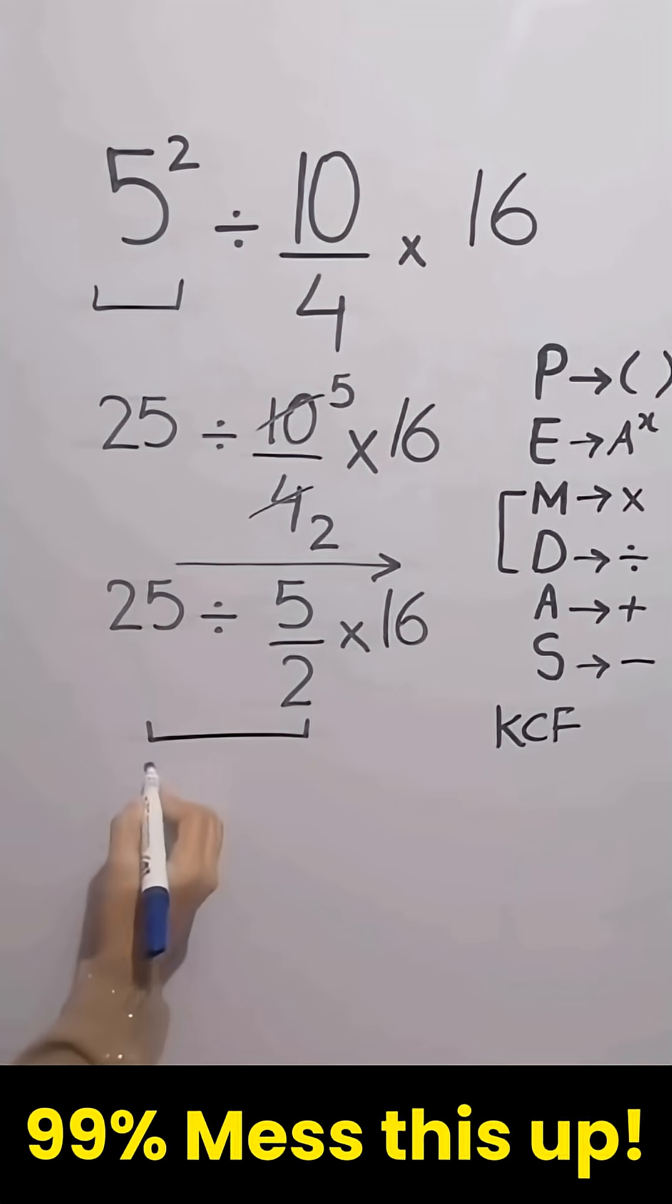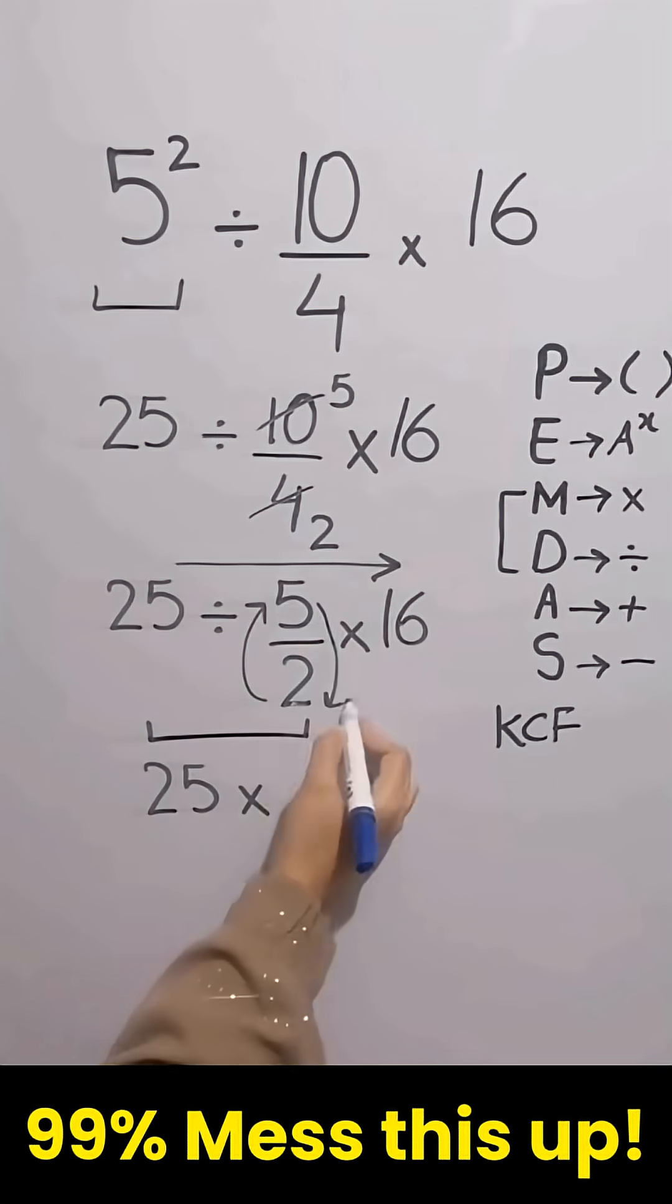Now according to KCF rule, keep the first fraction as it is, change division into multiplication, and flip the second fraction.